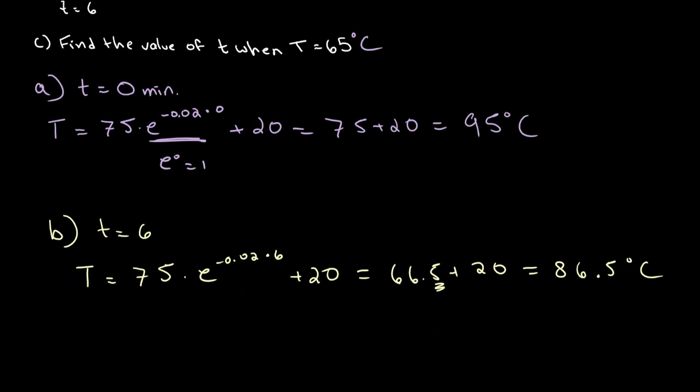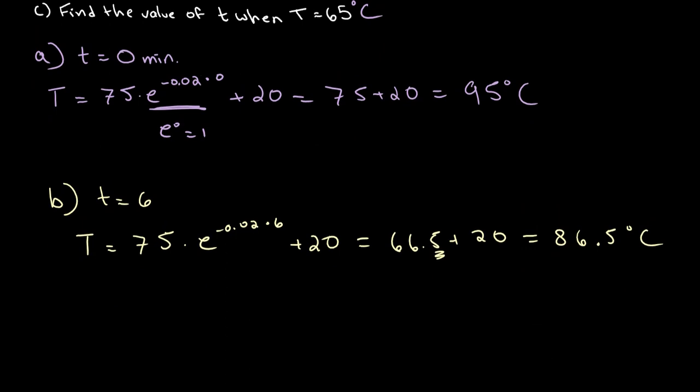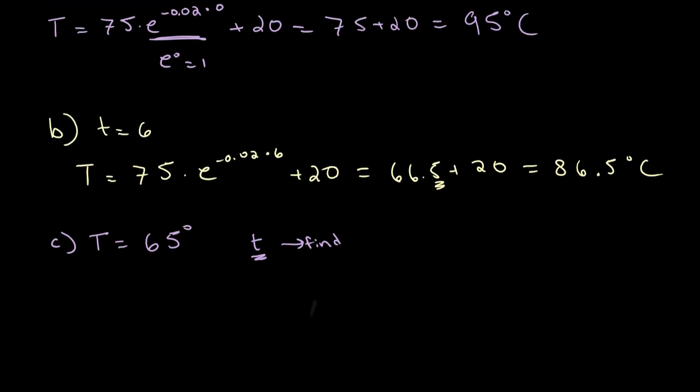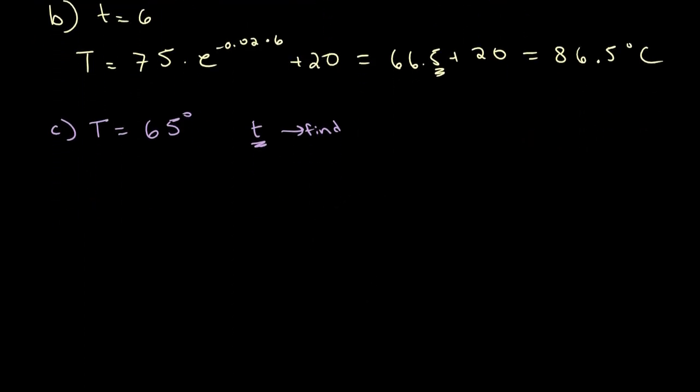Now for part C. Part C asks us to find the value of T, or the time, when the temperature is 65 degrees. So when the temperature is 65 degrees, in this case, T, or time, is our unknown. So what we do here, once again, is we simply plug the value for T, or temperature, into our equation.